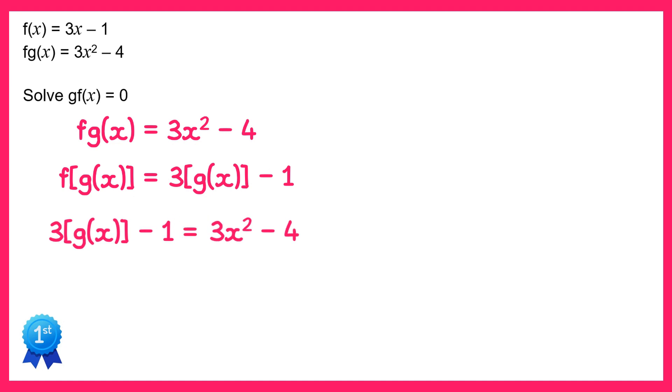Now we can just rearrange this equation to get g of x. If you add 1 to both sides you get 3g of x equals 3x squared minus 3. Then divide both sides by 3. On the left you get g of x, and on the right 3x squared minus 3 divide by 3.